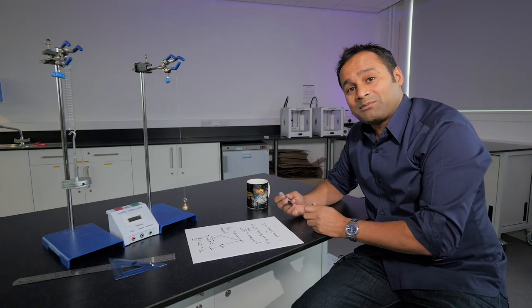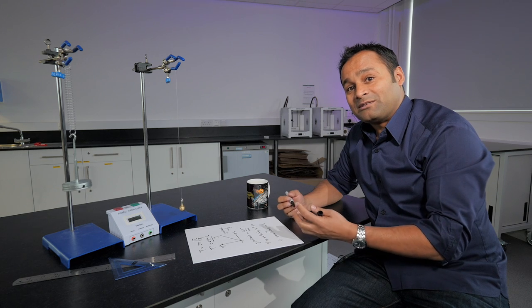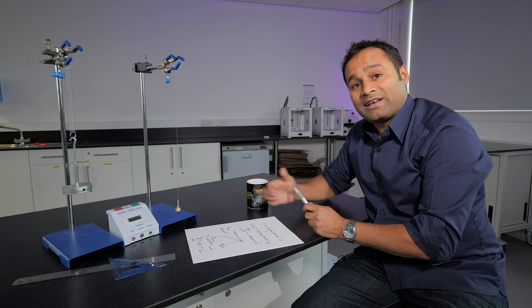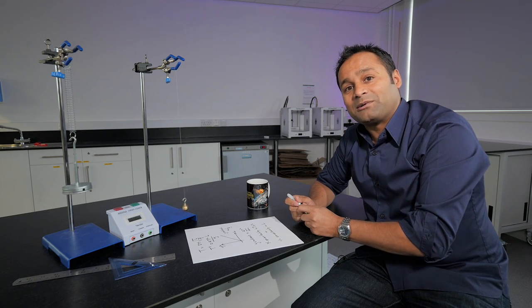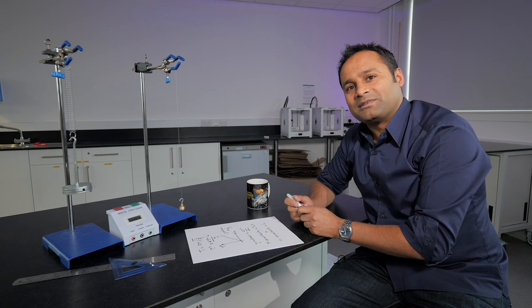So that's my approach to finding an approximate value for the uncertainty in the value for g that we'd arrive at using the pendulum. I'd love to know what you think about this approach and if you've got any suggestions for improvements.